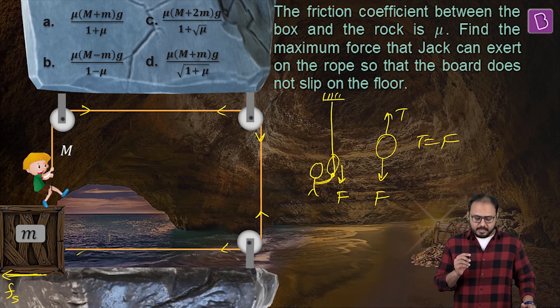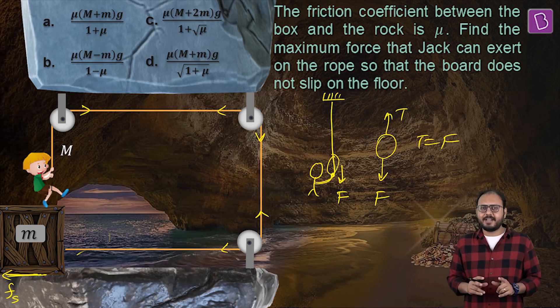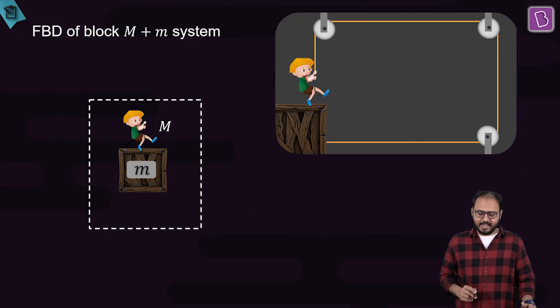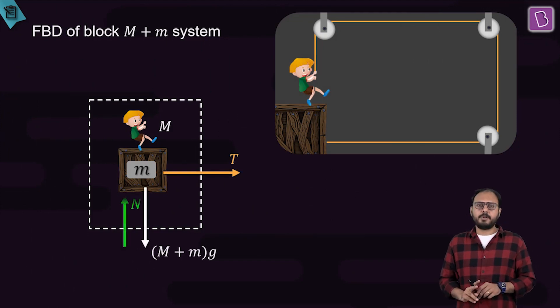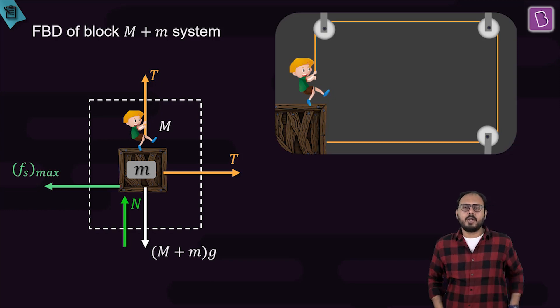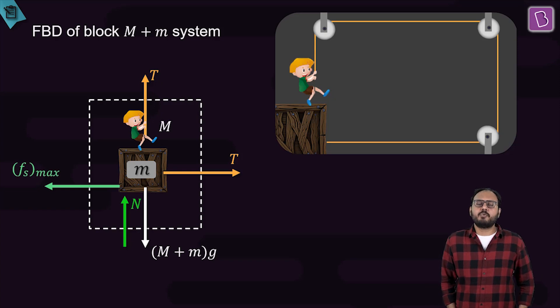Hint number three. Instead of treating them separately, why don't you treat Jack and the box - Jack in the box - as one system. And there you go. For your perusal, I have drawn the FBD. And I will wait for 30 seconds if you can give me the right answer. What are we looking for? You are looking for the value of tension T. Can you balance the forces both in x direction and y direction and give me the answer please?